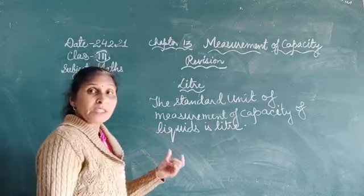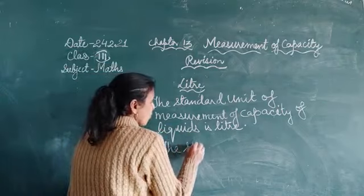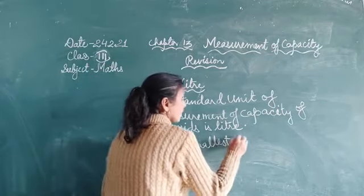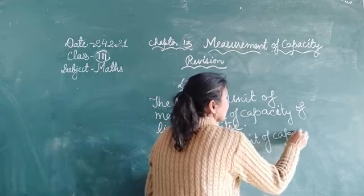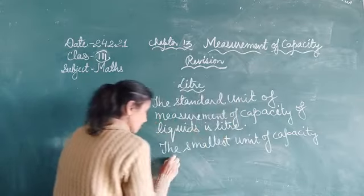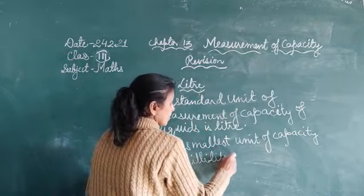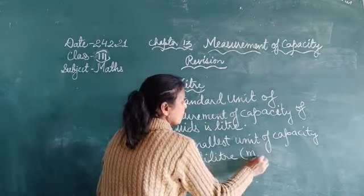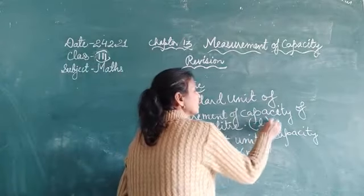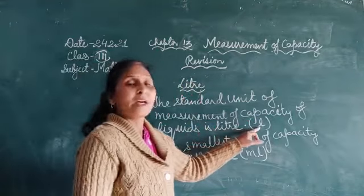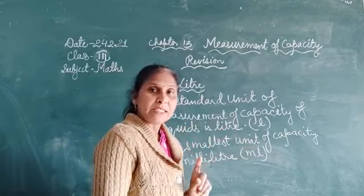The smallest unit of capacity is millilitre. The short form of millilitre is ml. The short form of litre is L. We use L to denote litre and ml to denote millilitre.